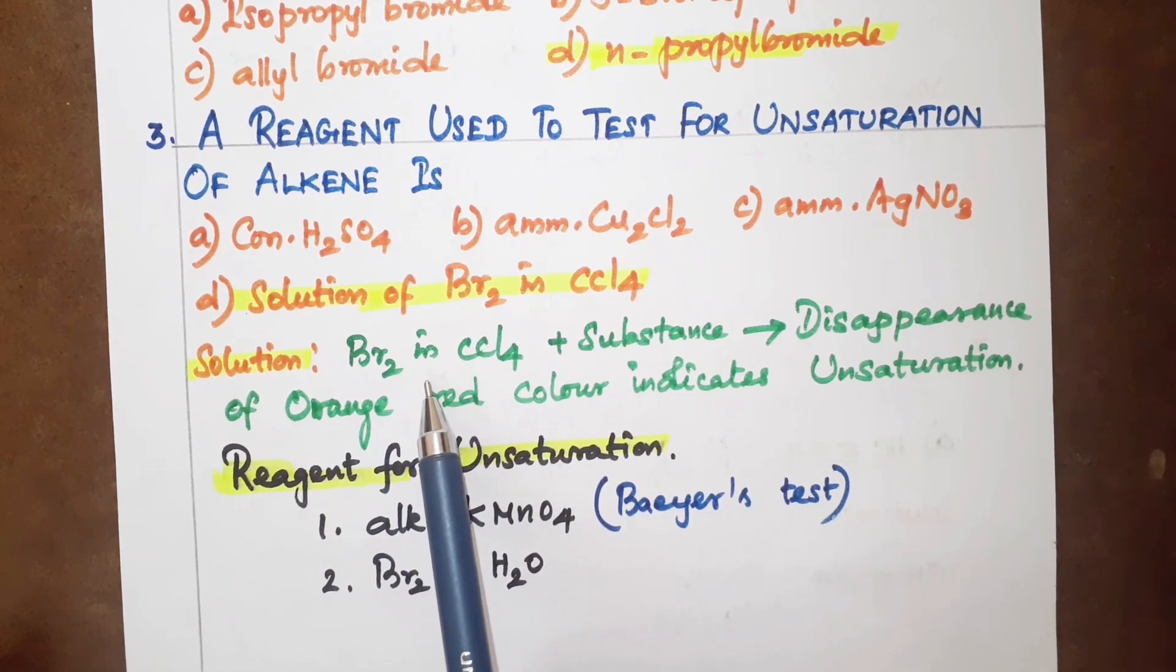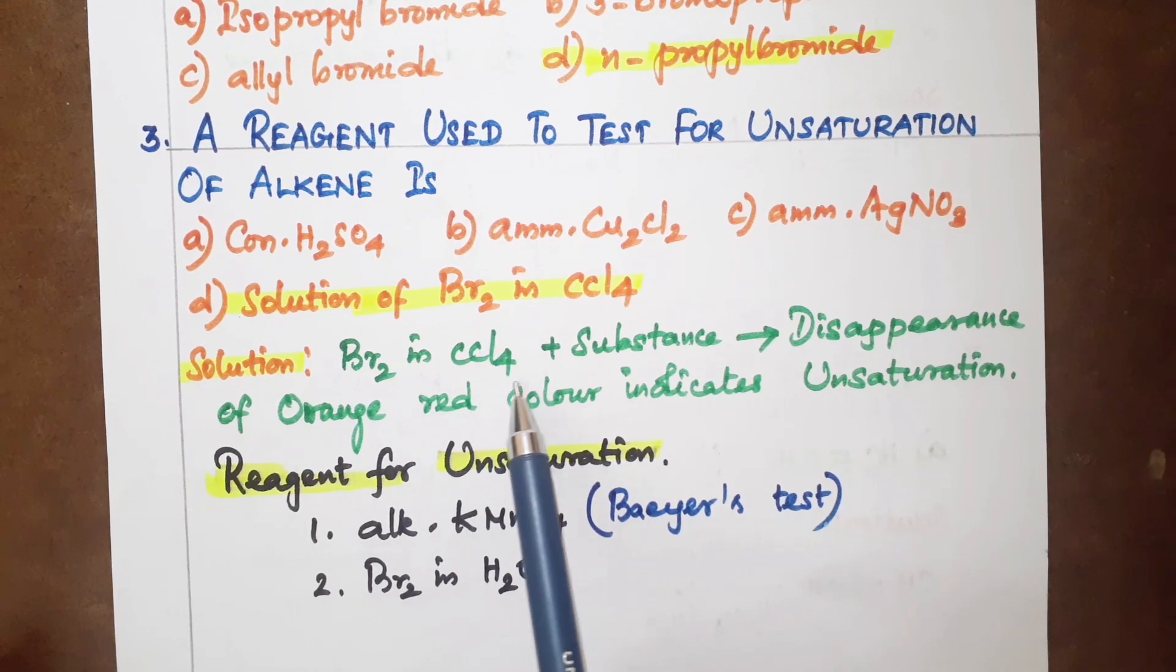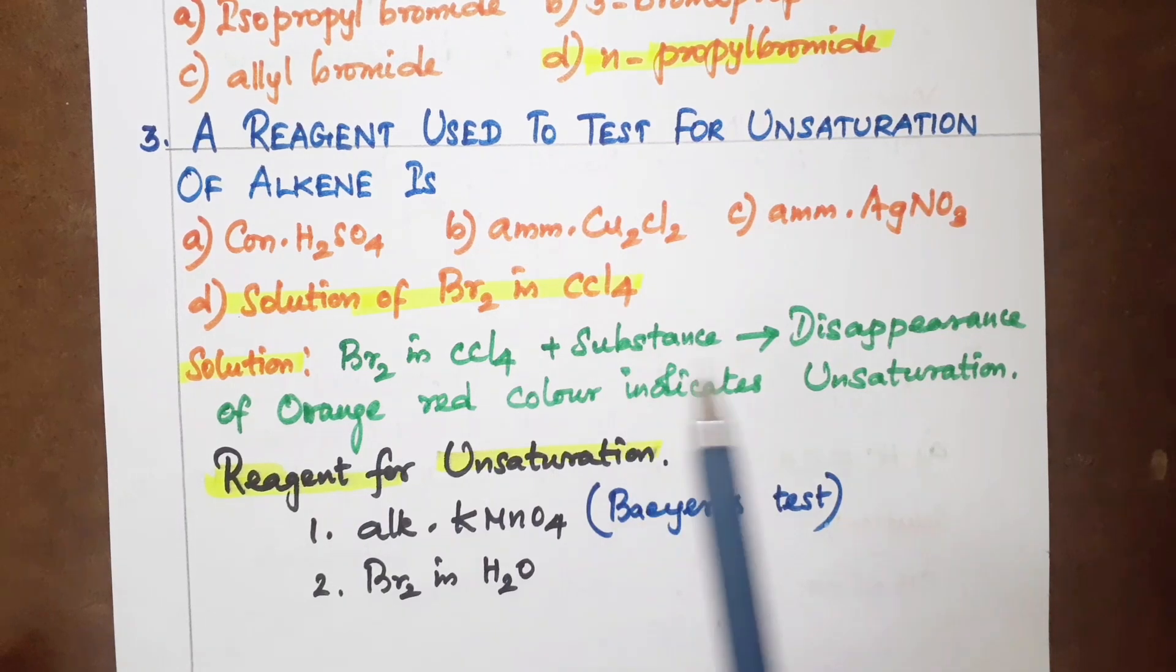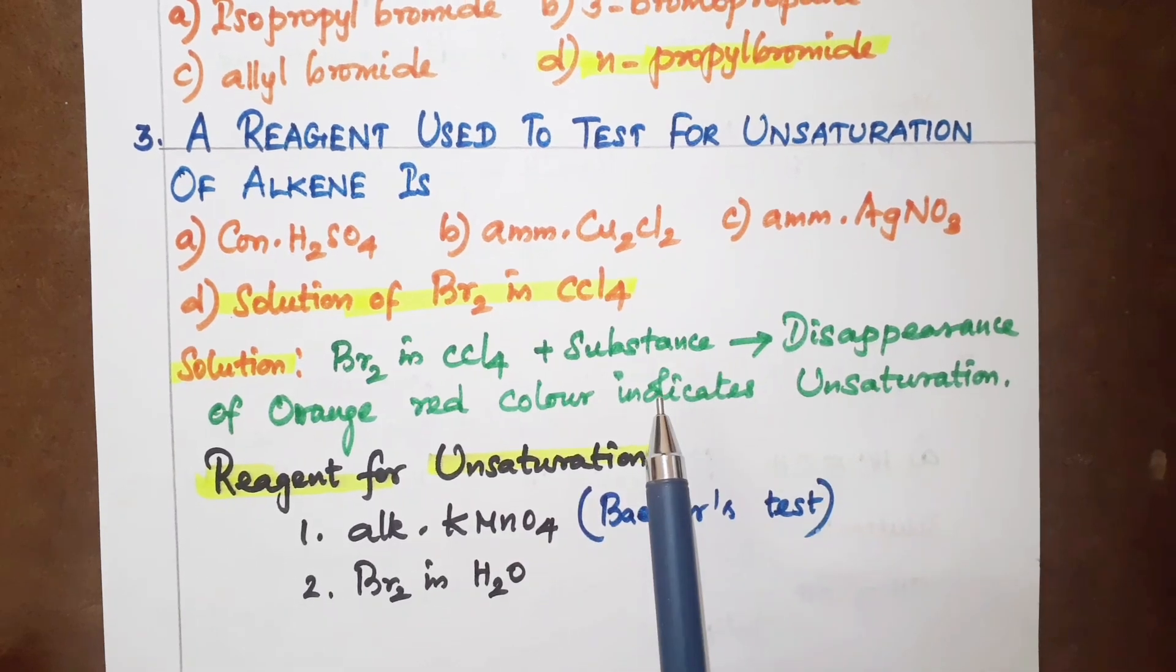Bromine in carbon tetrachloride is used to test alkenes. The disappearance of the orange-red color indicates unsaturation. This is the correct reagent for this test.